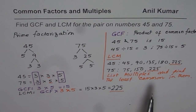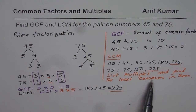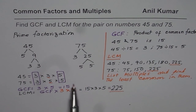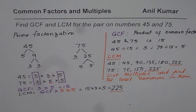That is an alternate method. You can use either listing multiples or prime factorization to find the LCM. Here we have two different methods to find LCM. I hope that helps. Thank you and all the best.